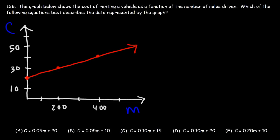Number 128. The graph below shows the cost of renting a vehicle as a function of the number of miles driven. Which of the following equations best describes the data represented by the graph? Now, in order to answer this question, you need to be familiar with linear equations. Here's a linear equation in slope-intercept form: y equals mx plus b.